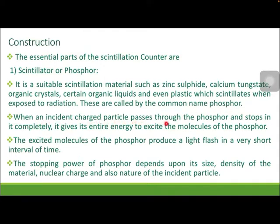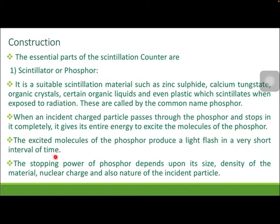When an incident charged particle passes through the phosphor and stops in it completely, it gives its entire energy to excite the molecules of the phosphor — it dissipates, meaning loses, all its energy in the phosphor material. That energy is utilized to excite the atoms and molecules, and when they are excited they emit light, which is called scintillation. The excited molecules of phosphor produce a light flash in a very short interval of time — essentially instantly.